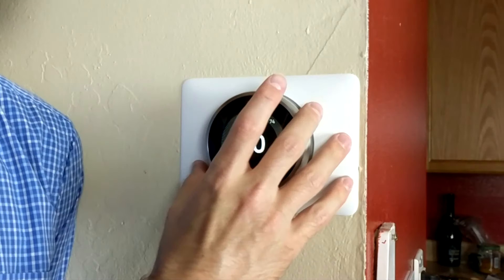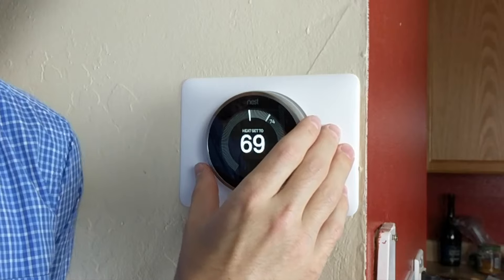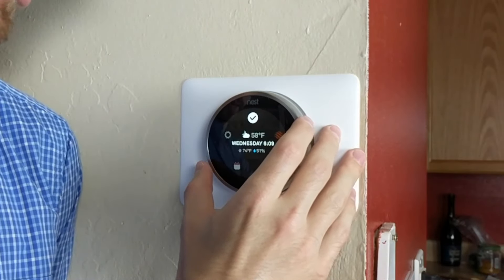Basic use of the Nest Thermostat is really simple. It really only requires two input methods: a ring around the thermostat which changes your selection and controls things like temperature, and a button which you can press by pressing in that ring like so. There's no touch screen here, but we would argue that using it this way is just as easy as using a touch screen on your phone.